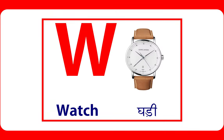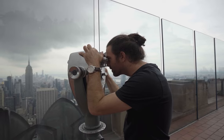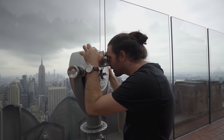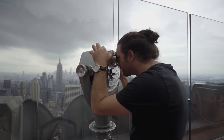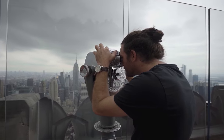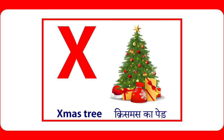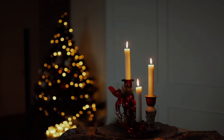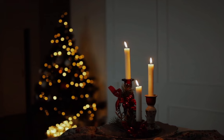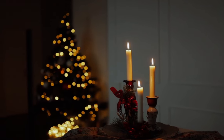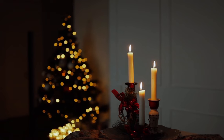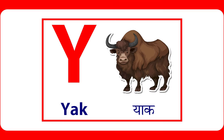W is for water. X is for X-mas tree. X-mas tree is used for celebrating Christmas. Y is for yak. Yak is a wild animal.